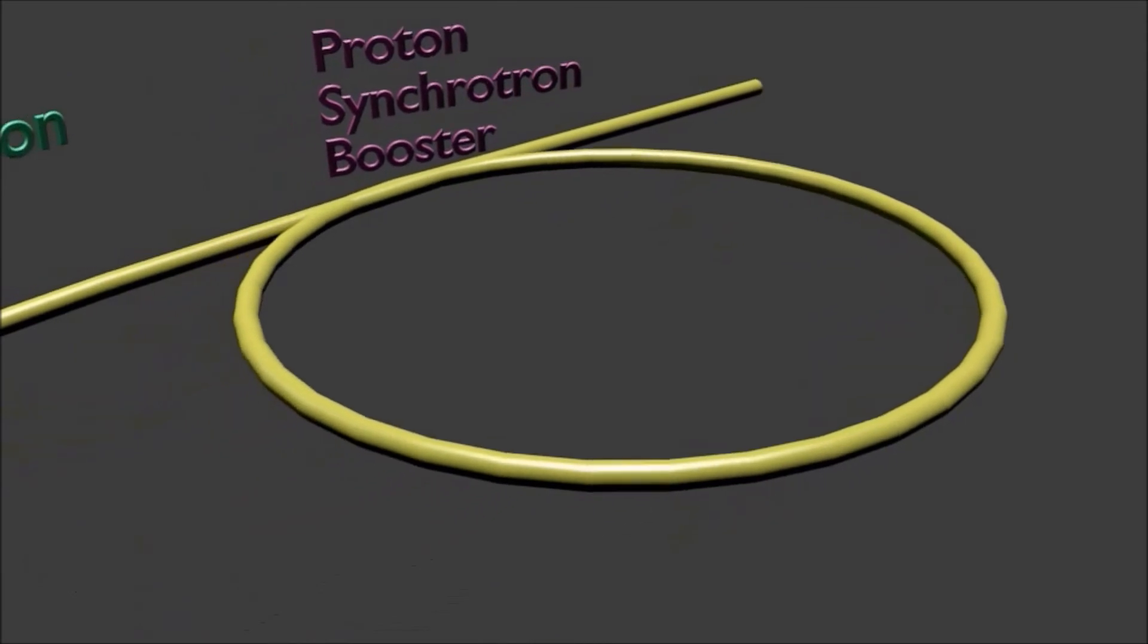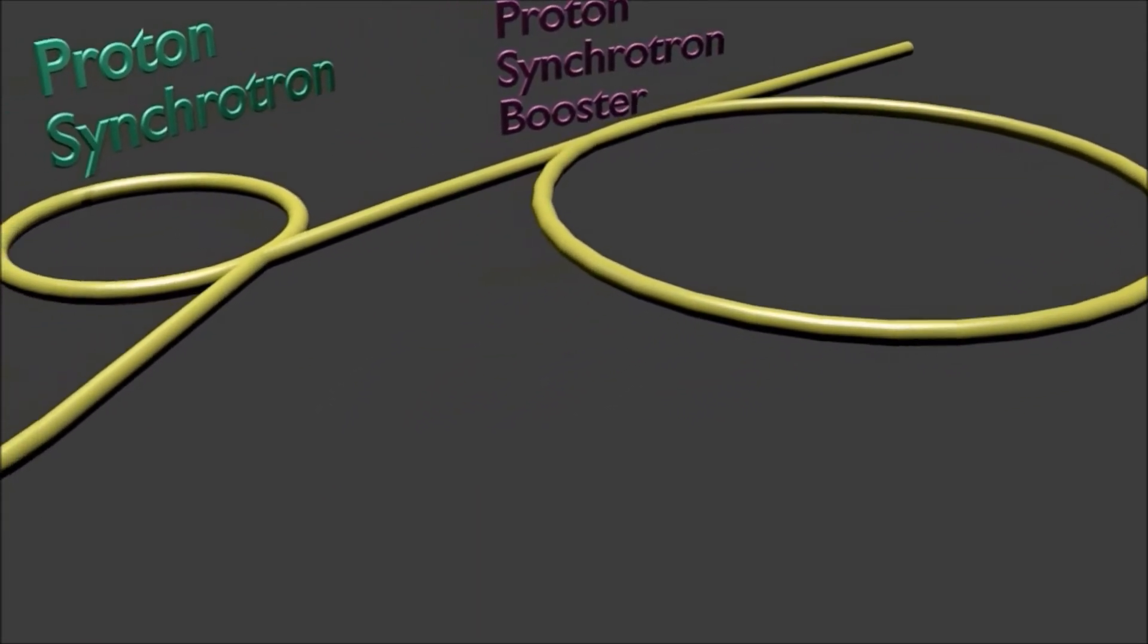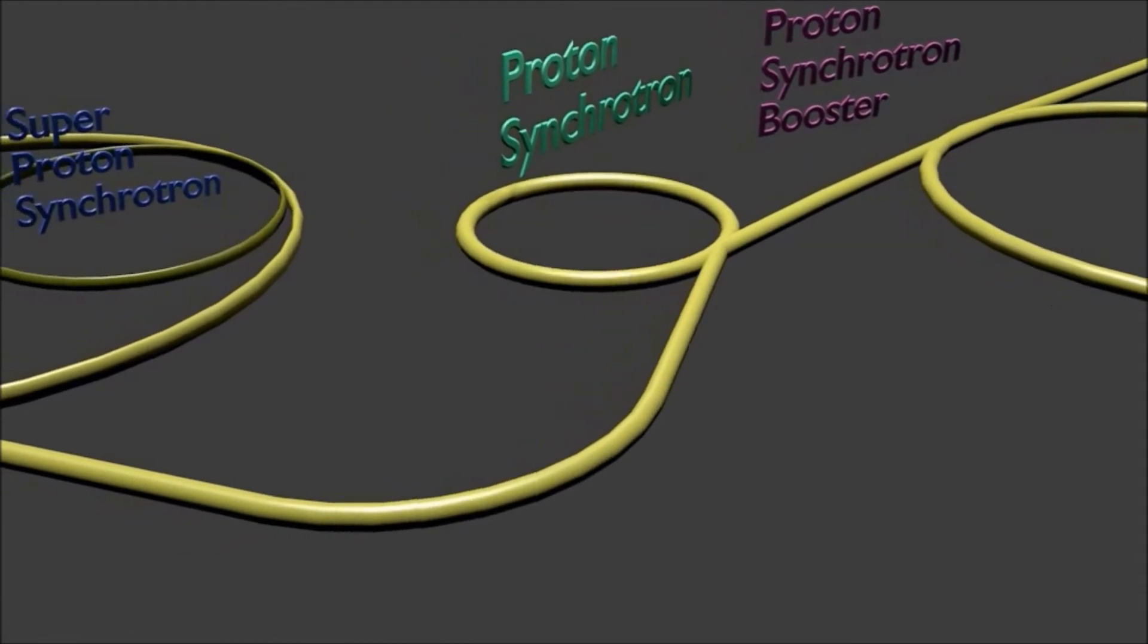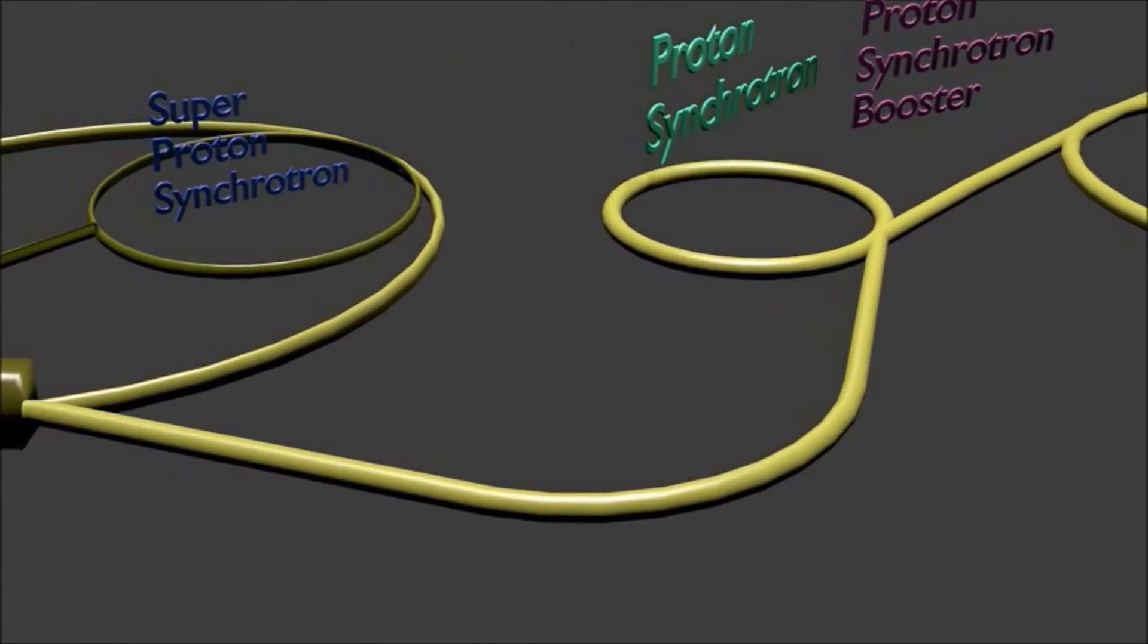A collider is a type of particle accelerator with directed beams of elementary particles. It accelerates the particles to very high kinetic energy and lets them impact on other particles.